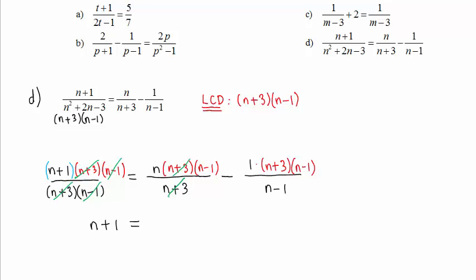In this fraction, n plus 3 divides out. We are left with n times n minus 1. In the last fraction, n minus 1 divides to 1. And we are left with minus 1 times n plus 3.